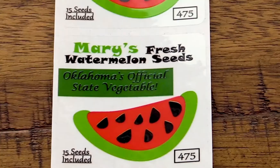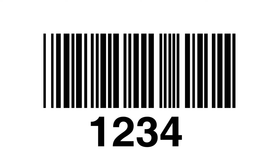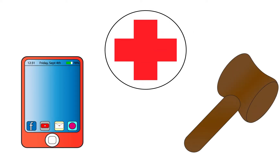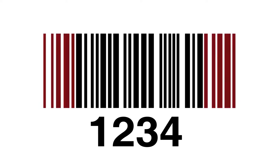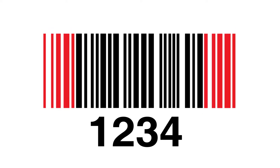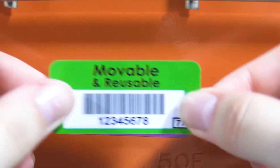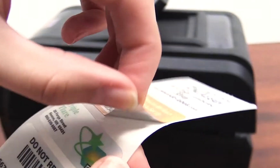Within the barcode world there are many types of barcodes. Let's start with Code 39 — one of the oldest barcodes around. Its symbology is found usually in electronics, healthcare, and government. Every Code 39 character consists of five bars and four spaces, with three of them wide and six narrow.